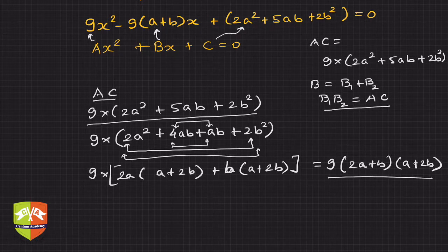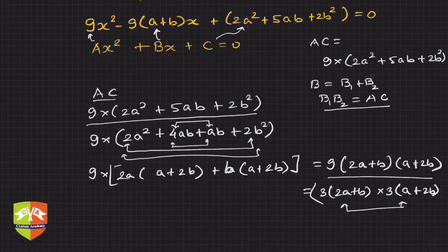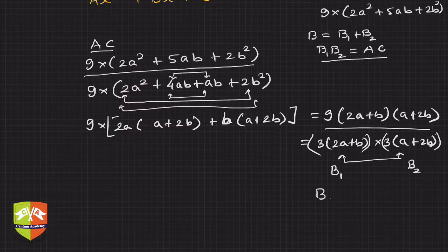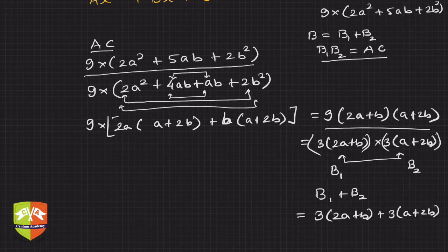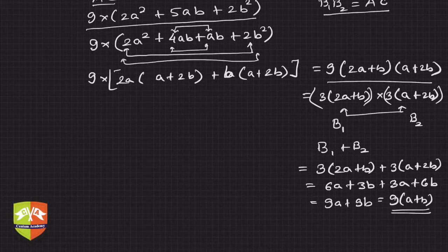Now, the middle term b is (9a + b). We can break the factors as b1 = 3(2a + b) and b2 = 3(a + 2b). Let's verify: b1 + b2 = 3(2a + b) + 3(a + 2b) = 6a + 3b + 3a + 6b = 9a + 9b = 9(a + b), which equals b. So the split is confirmed.